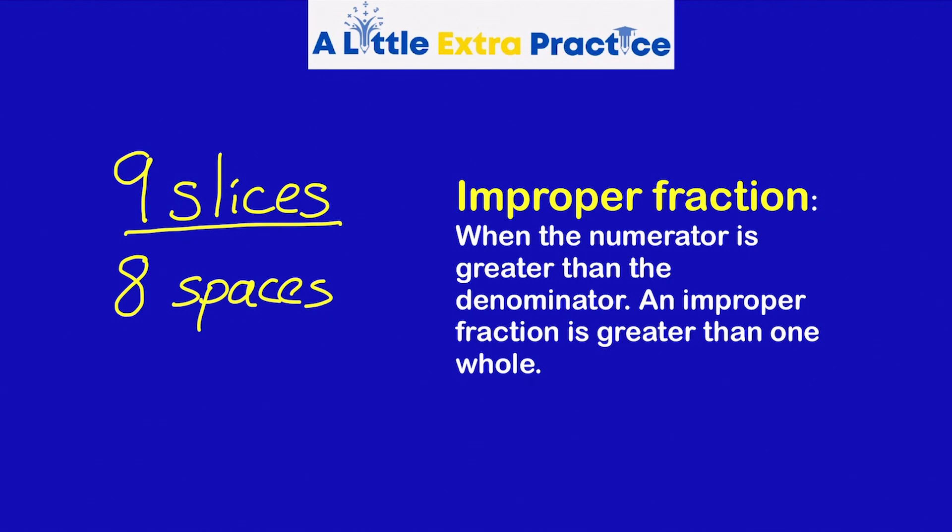What Maria has is an improper fraction. An improper fraction is when the numerator is greater than the denominator. An improper fraction is greater than one whole. So right now, Maria has more than one whole pizza.